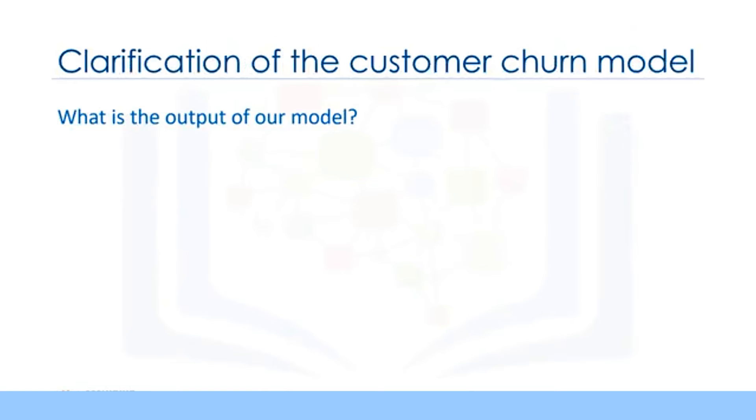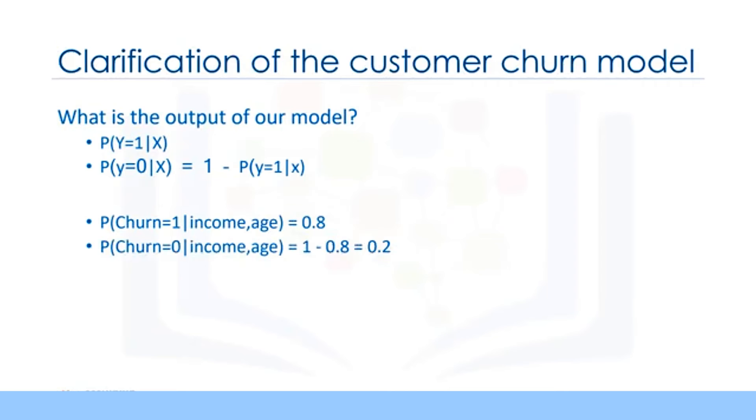So, what is the output of our model when we use the sigmoid function? In logistic regression, we model the probability that an input, x, belongs to the default class, y equals 1, and we can write this formally as probability of y equals 1, given x. We can also write probability of y belongs to class 0, given x, is 1 minus probability of y equals 1, given x. For example, the probability of a customer staying with the company can be shown as probability of churn equals 1, given a customer's income and age, which can be, for instance, 0.8. And the probability of churn is 0 for the same customer, given a customer's income and age can be calculated as 1 minus 0.8 equals 0.2.